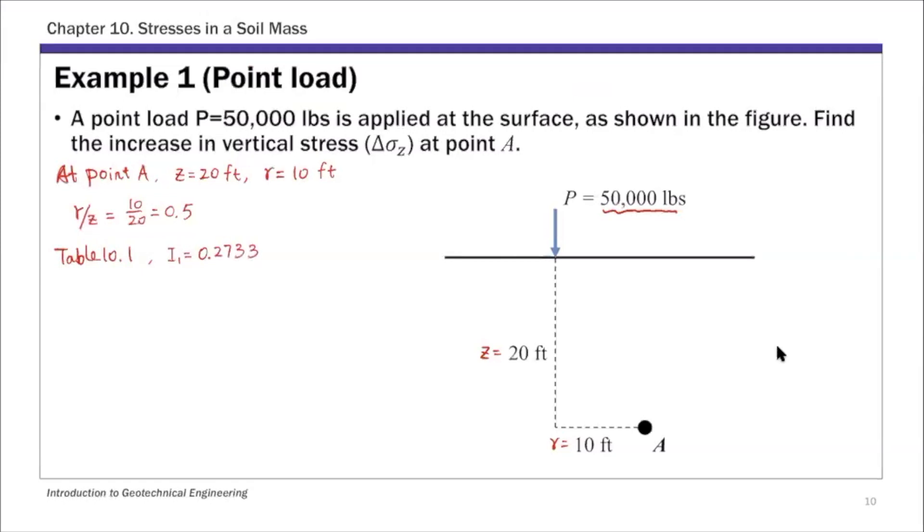Once you have this I1 value, then that increase in vertical stress, delta sigma Z, is simply P over Z squared times I1. This is from Boussinesq solution.